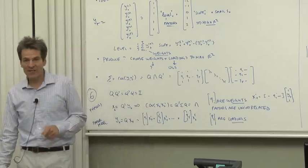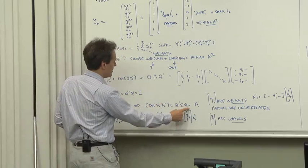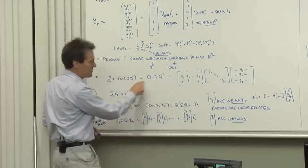Those factors will have an interesting property. The covariance matrix of the factors will be, well, it's q times the covariance matrix, q prime covariance matrix to the y, q prime sigma q.